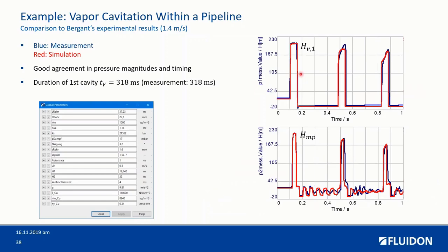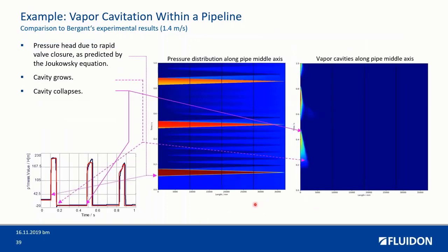Here you again see how well they are agreeing. Here you can basically see again these spatial and temporal distributions at the same time, where you can follow the path of the waves. And you can clearly identify in this plot — where you see not the pressure but the vapor fraction — how the vapor bubbles are generated and collapse.